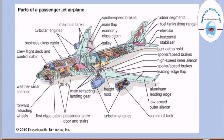Just next to that we have the business class cabin. Next to that we have turbofan engines — in this picture you can see there are a total of four engines, situated on the wing part of the aircraft. Next to the turbofan engines we have the main fuel tanks, where the fuel is stored. The aircraft fuel is stored in the wings, providing easy connection to the engines. On the wing portion we also have spoilers, which are also known as speed brakes.